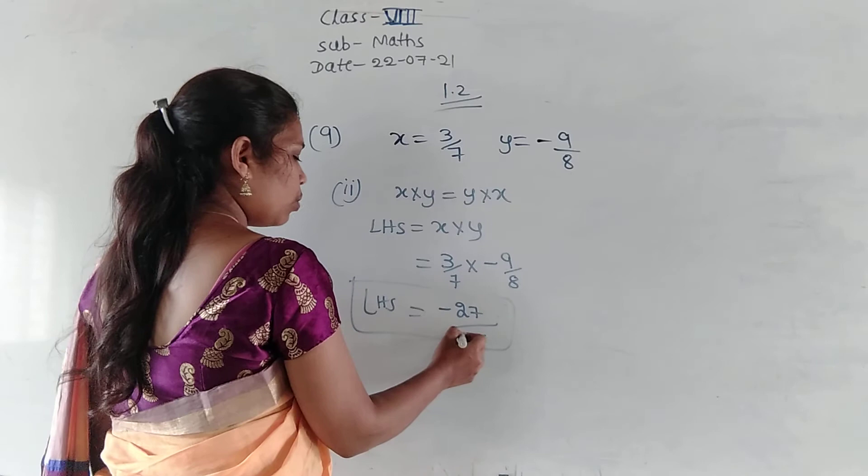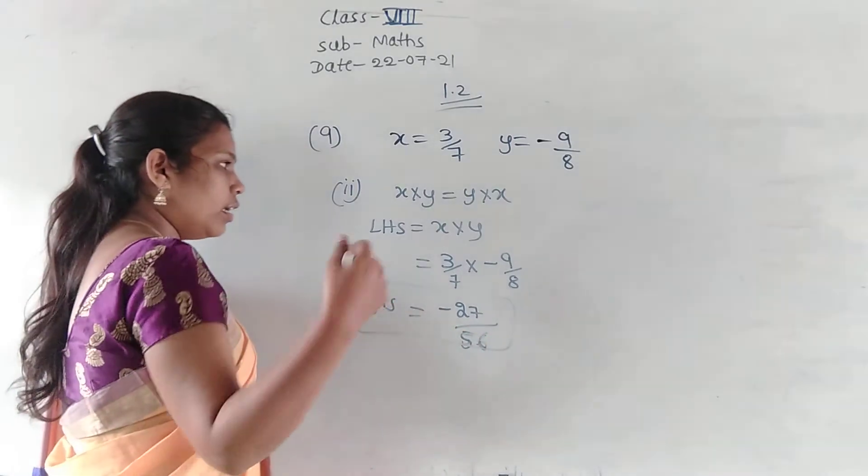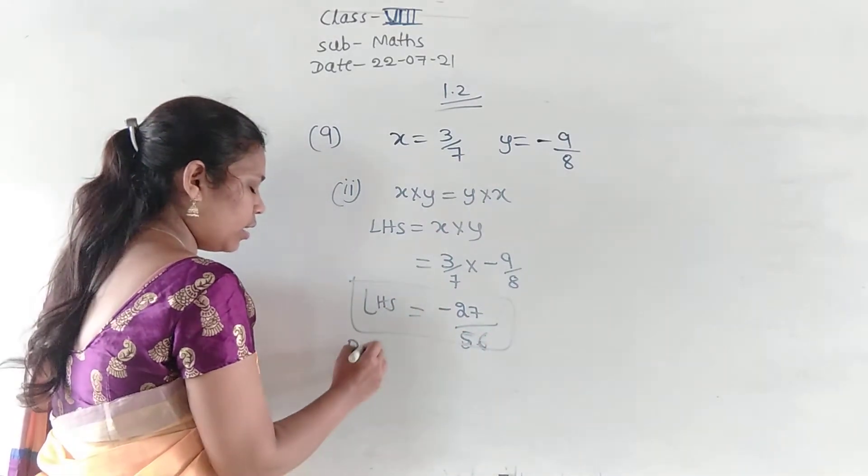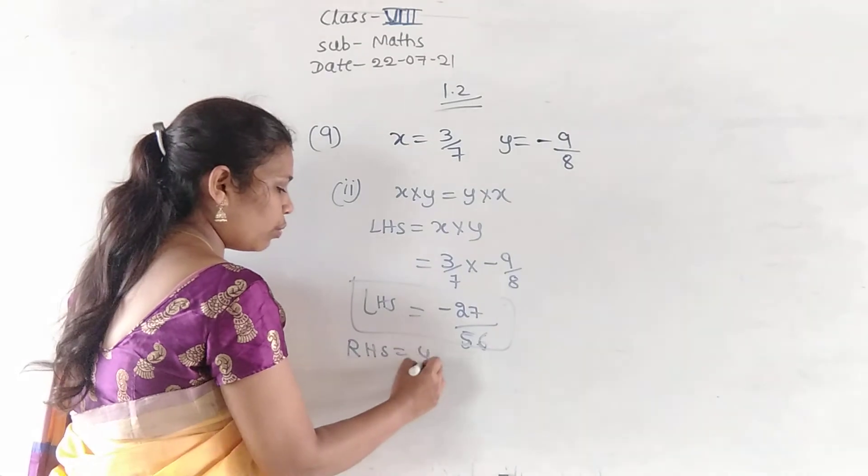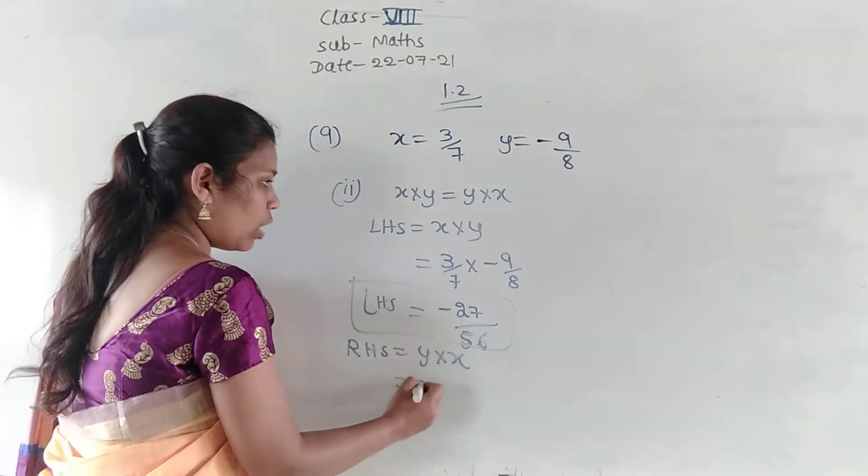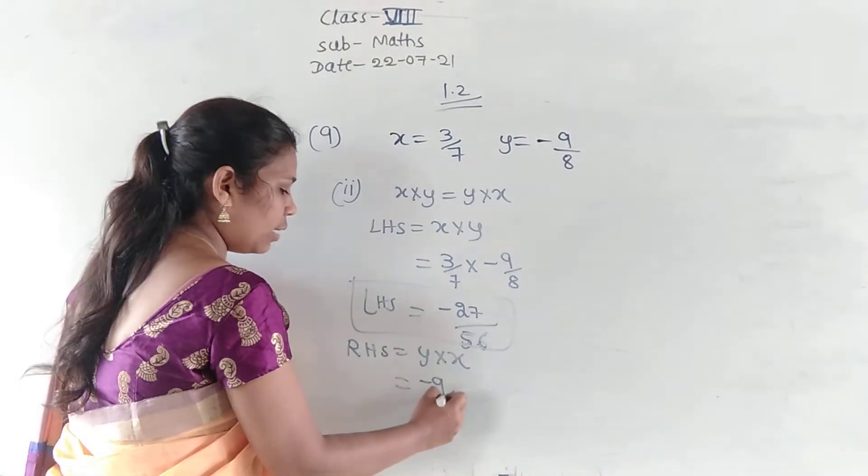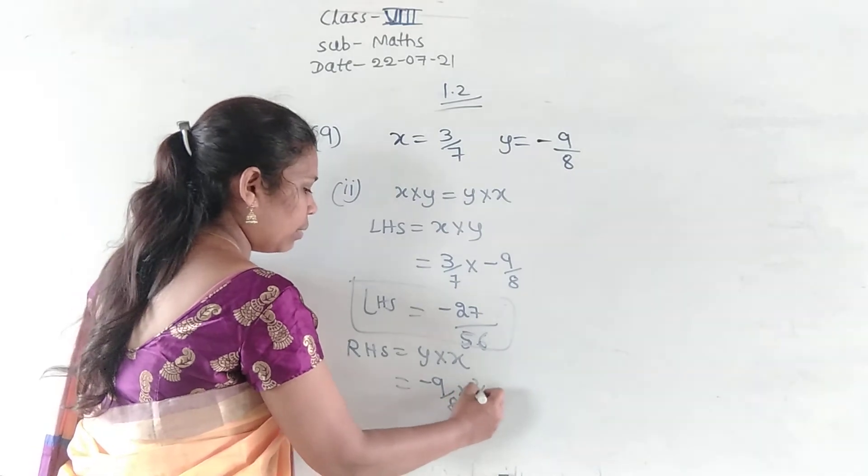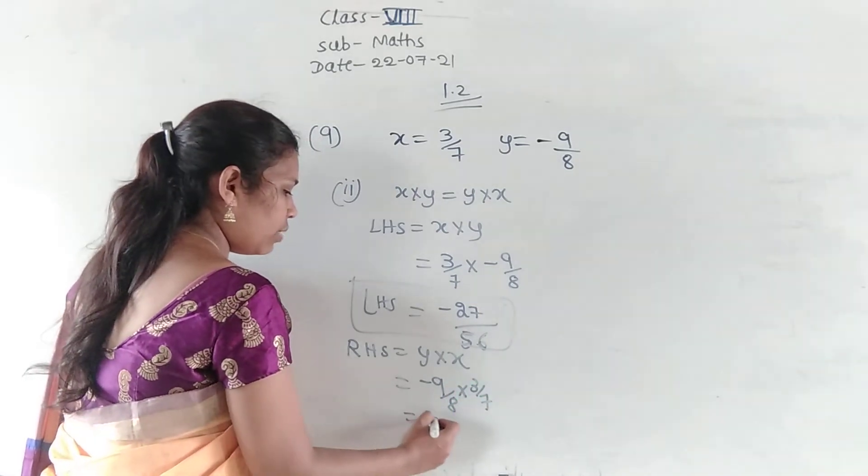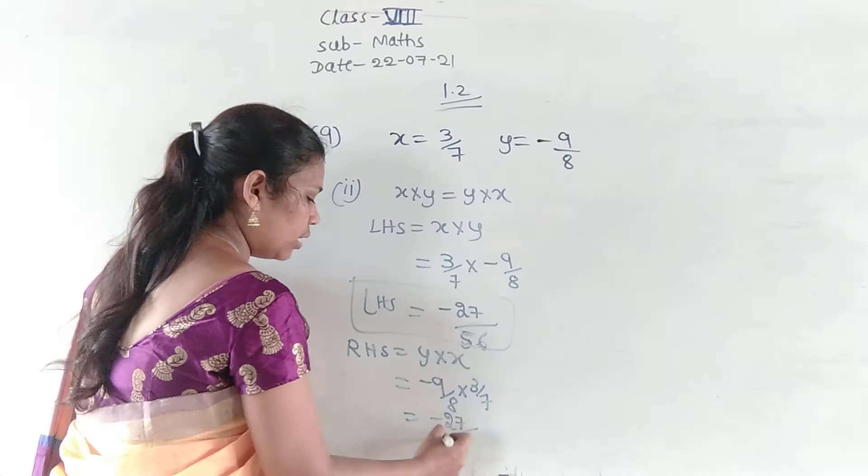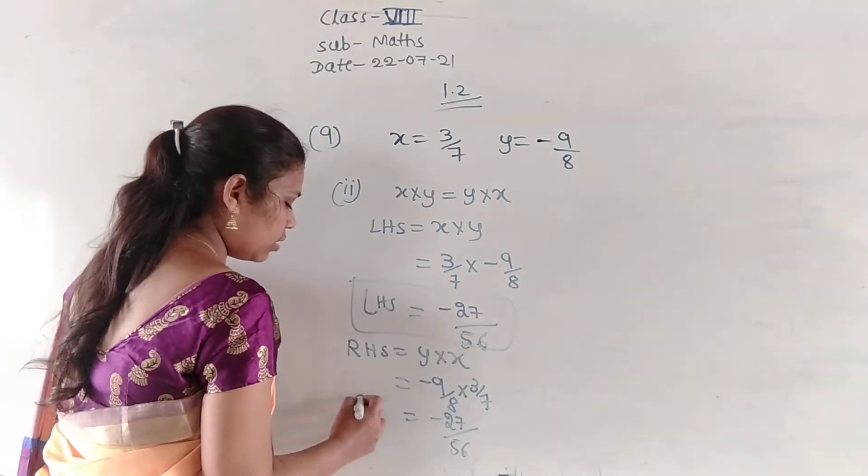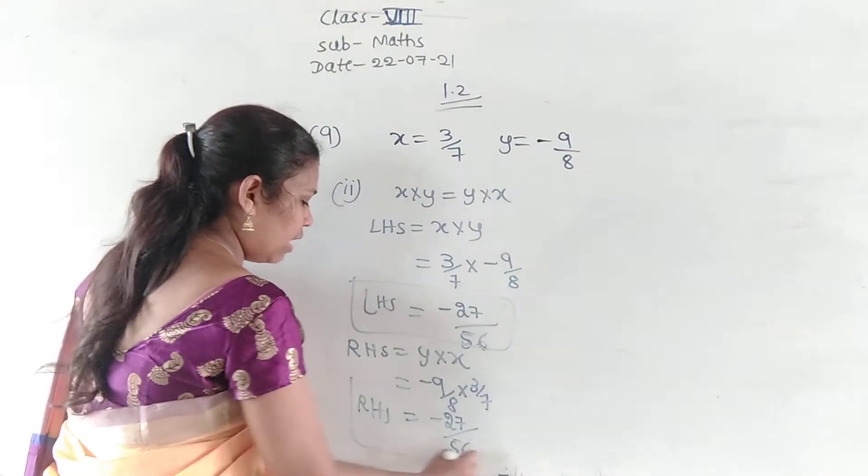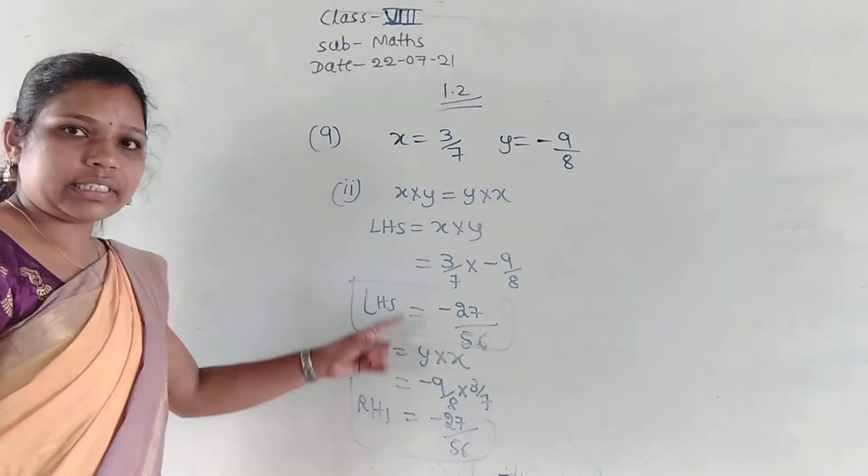So, now the RHS. RHS is equal to Y into X. Y is minus 9 by 8 into 3 by 7. So, that will be minus 27 divided by 56. RHS same value. Minus 27 by 56. Here also minus 27 by 56.